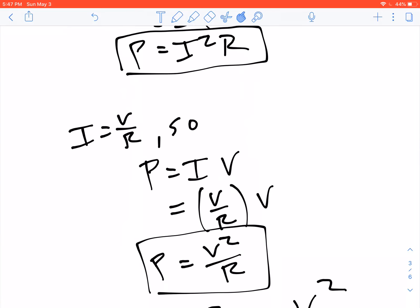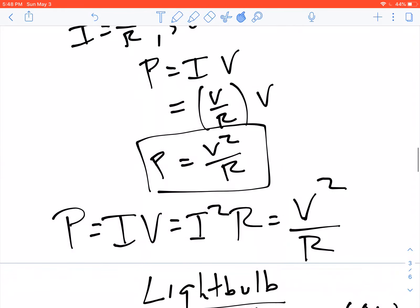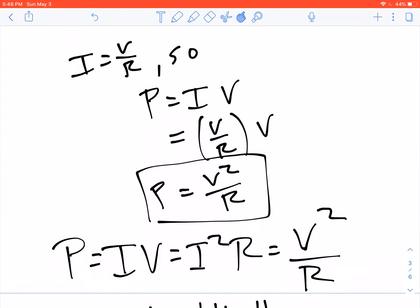We can also do another substitution, because I equals V over R, we can instead substitute in V over R for I in the power formula, and then we get P equals V squared over R. This would be useful if we had the voltage and resistance and wanted the power, but didn't have the current. So altogether there are these three different formulas for power. P equals IV, P equals I squared R, and P equals V squared over R.